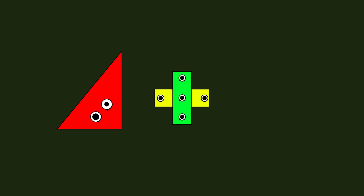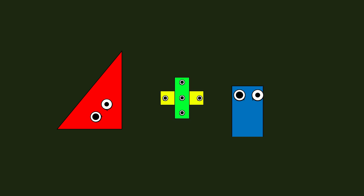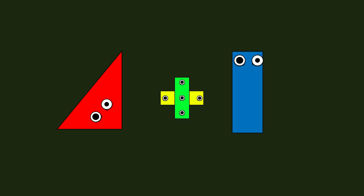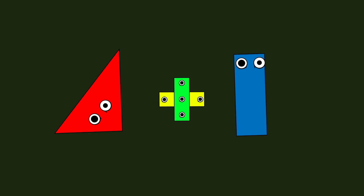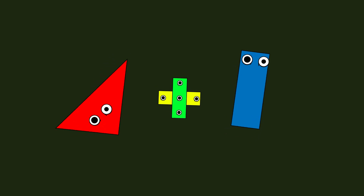Number 4: triangle plus rectangle. When the shapes connect in a row, make number 4.